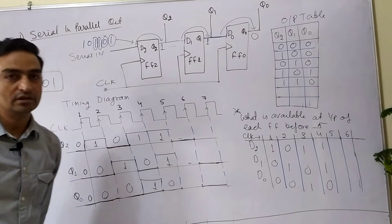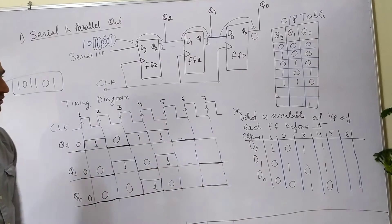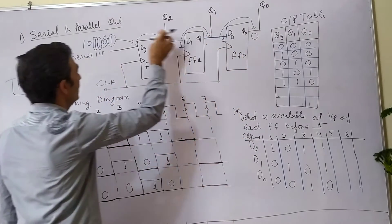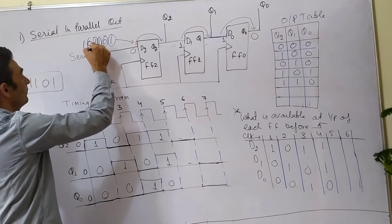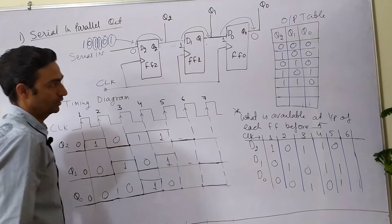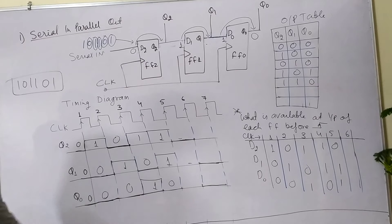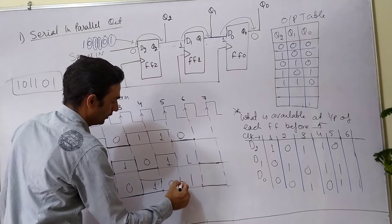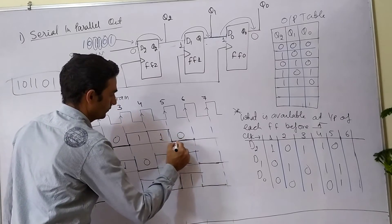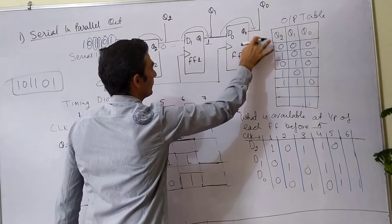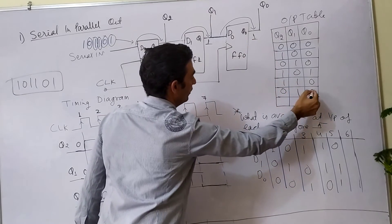What is available at the input of each flip-flop before the fifth clock edge? D2=0, D1=1, D0=1 at the input before the rising edge of the clock. Therefore, after the fifth clock edge, the output will be Q2=0, Q1=1, Q0=1.